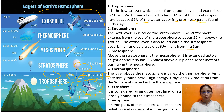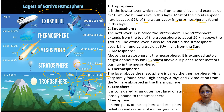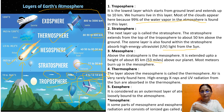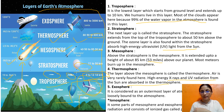The next layer is the mesosphere, which extends up to 80 to 90 kilometers, or 53 miles, above our planet. Most meteors burn up in the mesosphere. As you go upward from the ground, the temperature falls. The thermosphere extends up to 800 kilometers. Air is very rarely found in this layer, and high-energy X-ray and UV radiation from the sun are absorbed in the thermosphere.